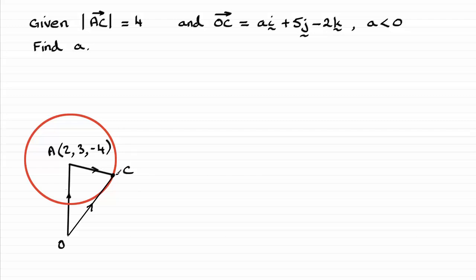So what I'm going to do is work out the vector A to C, and then I'm going to use this result by using Pythagoras' theorem, and form an equation that equals 4. And I should be able to solve that and work out what the value of A is.